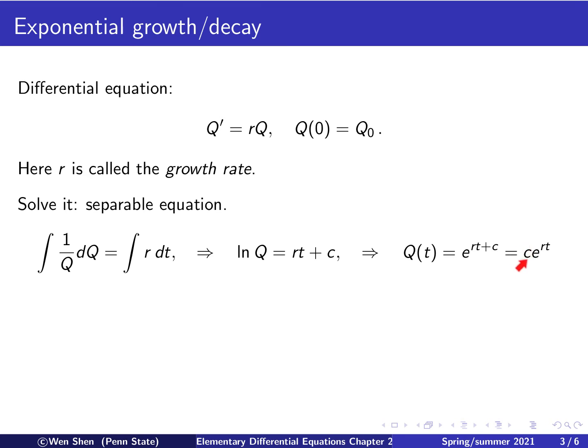Here, probably I should call this c tilde to denote it's a different arbitrary constant from that one. But nevertheless, this is an arbitrary constant. Okay, now we can use the initial condition to find this constant c here.